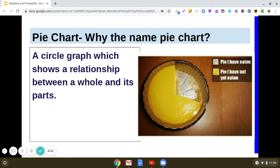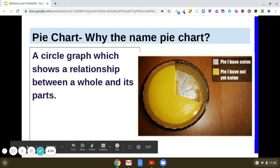A pie chart is basically a circle graph which shows a relationship between a whole and its parts. Here is a picture of a banana pie showing the fraction which has been eaten up and the remaining portion.